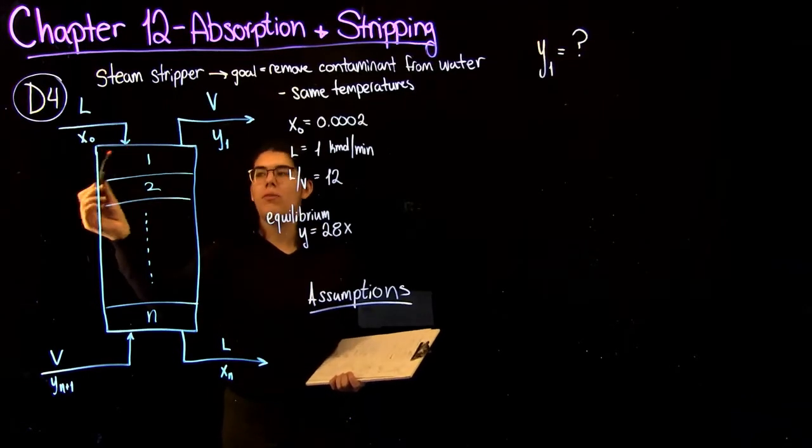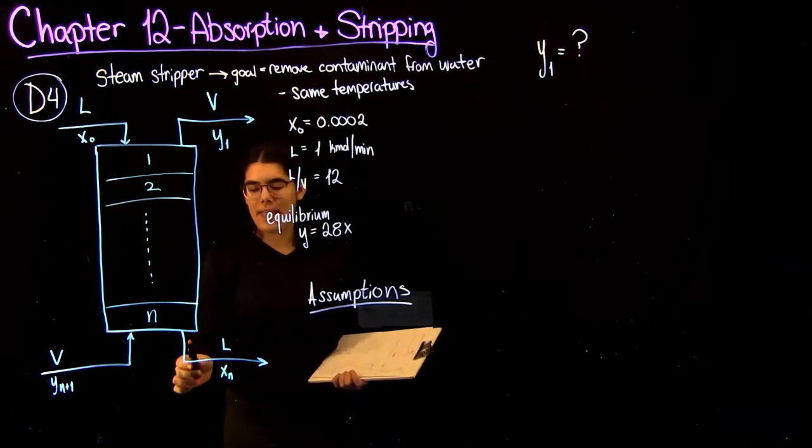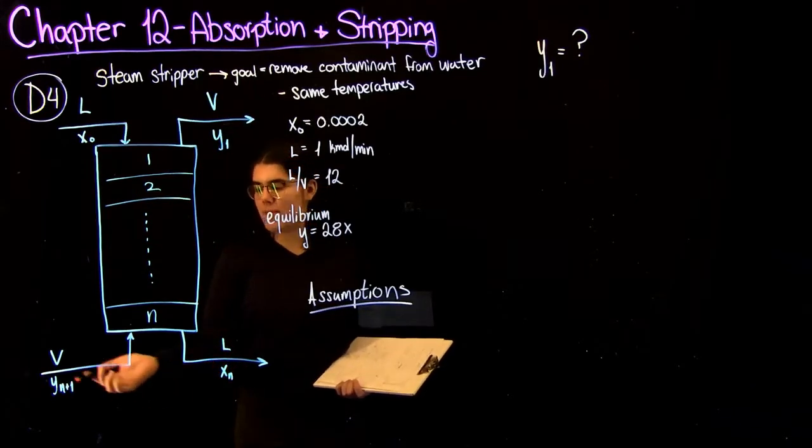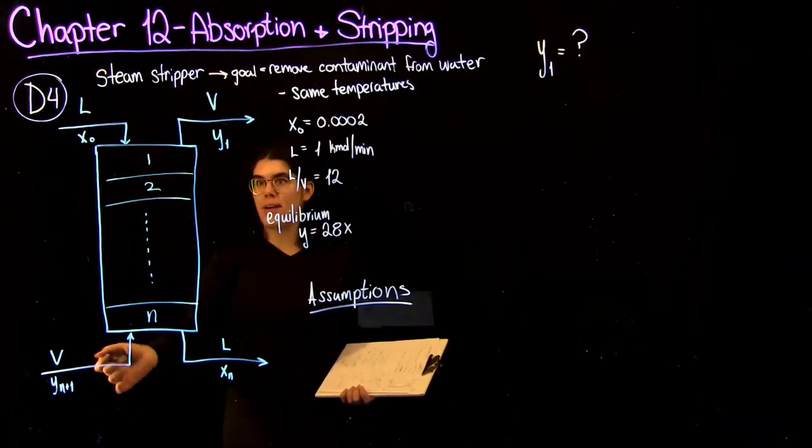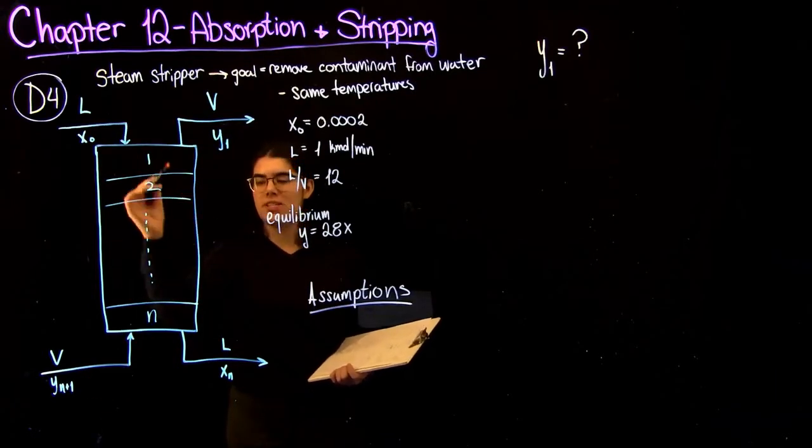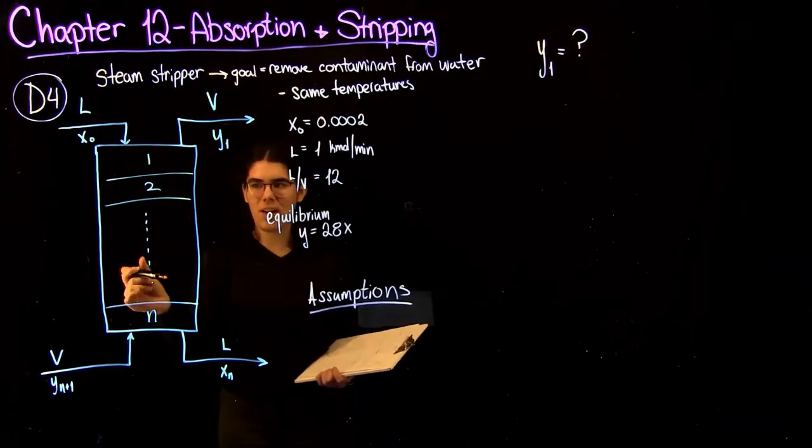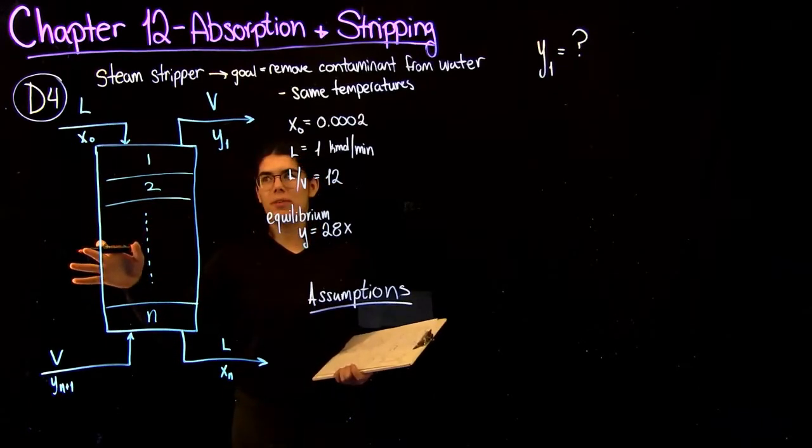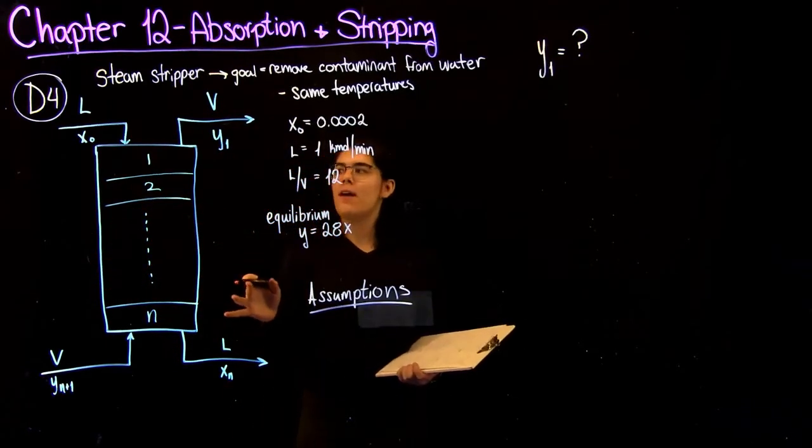You have a liquid coming in with some initial composition, and then the liquid coming out of the bottom here with a new composition. Same thing vapor, vapor actually comes in the bottom here and then leaves the top again with some initial compositions. And inside, much like a distillation column, we have many different stages where the compositions are moving from the liquid to the vapor stream.